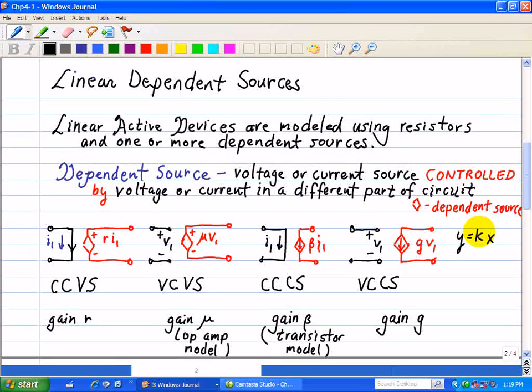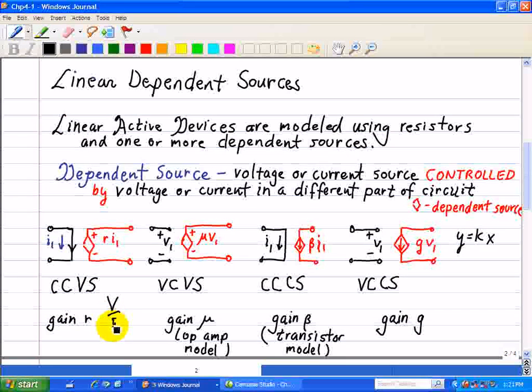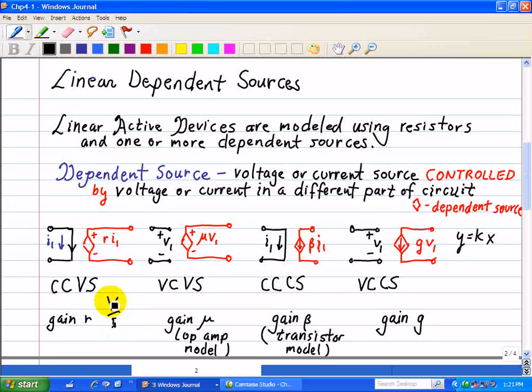In each type of dependent source, there are different proportionality parameters. For CCVS, we define R as resistance because our output is voltage and our input is current. This is a gain V/I, which we call gain R.